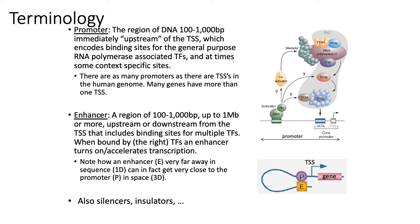One question is: how do these enhancers operate at such long distances? An example of a very simple mechanism is through looping. In the diagram on the bottom right, you can see that even though the enhancer represented by the E box can be very far away from the promoter P, through looping, the enhancer can be brought into close proximity of the promoter and basically help recruit transcriptional machinery to that particular gene.